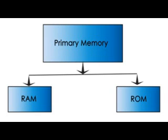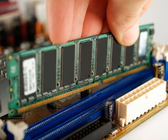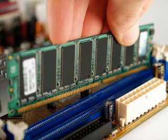The first type of primary memory is RAM. RAM stands for Random Access Memory. The instructions required for calculation are stored in RAM. We can read data from this memory as well as write data to it. That is why it is known as read/write memory.